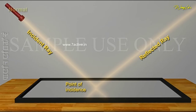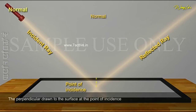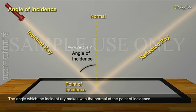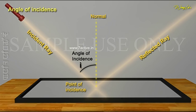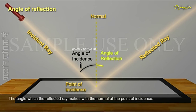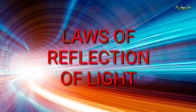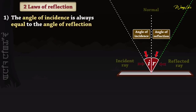The normal lines are the same as incident light rays — this is the angle of incidence. And the normal lines are the same as reflected light rays — so the angle of reflection. The angle of incidence and the angle of reflection are the same.